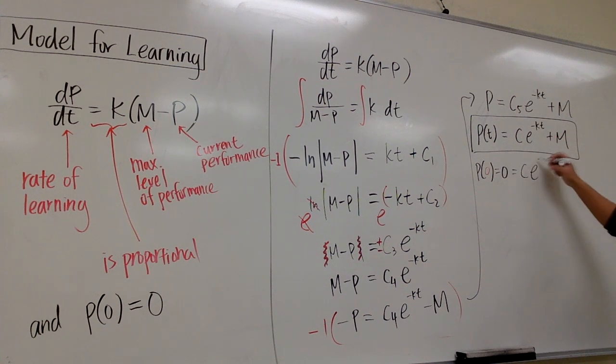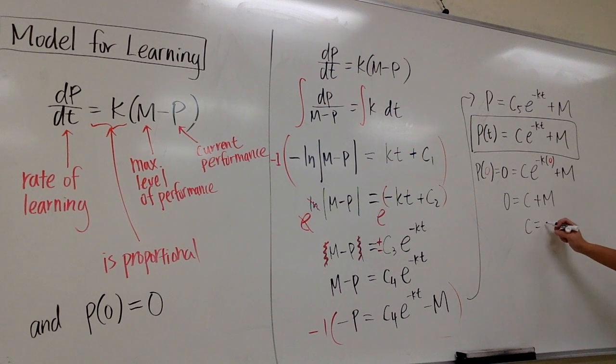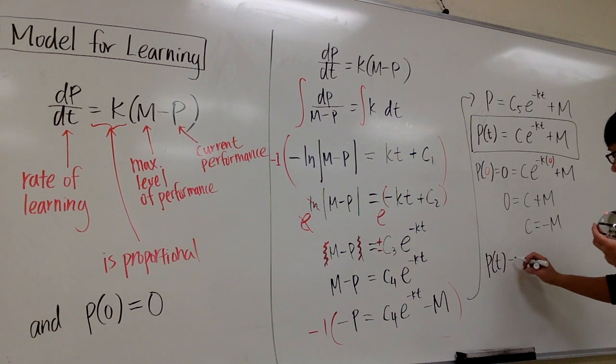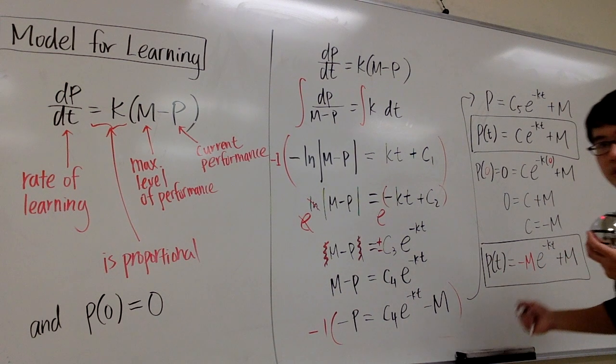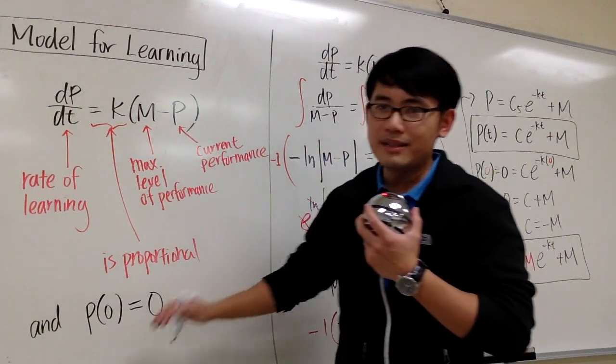we get c e to the negative k times 0 plus m. Well, solve this equation, this is 0 equals to, e to the 0 power is 1, so we have c plus m. In other words, I can say c is equal to, bring the m to the other side, which is minus m. And therefore, p of t is going to be negative m for the c value, e to the negative kt plus m. So this right here will be pretty much the specific solution, the particular solution, based on this initial condition.